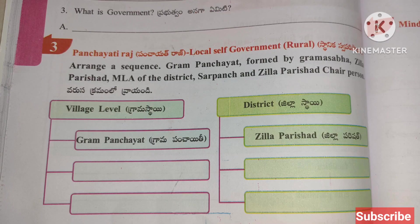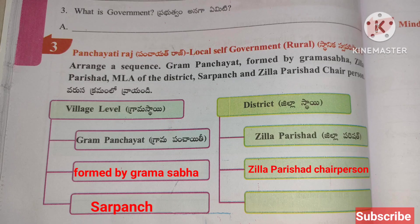Arrange in sequence — Village level: Grama Panchayat, formed by Grama Sabha, Sarpanch. District: Zilla Parishad, Zilla Parishad Chairperson, MLA of the district.